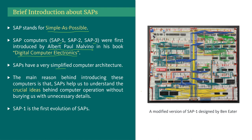That's why it is very important to learn these kinds of architectures to get the idea of a basic computer. There are three types of SAPs — SAP-1, SAP-2, and SAP-3 — and SAP-1 is the first among those. At the right side in the figure we can see an implementation of SAP-1, done by Ben Eater. It is actually a modified version of SAP-1, and he has a long video series about it. He did the whole implementation on a breadboard, which is obviously impressive.